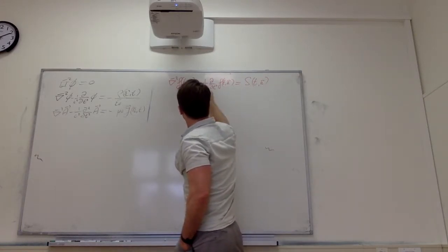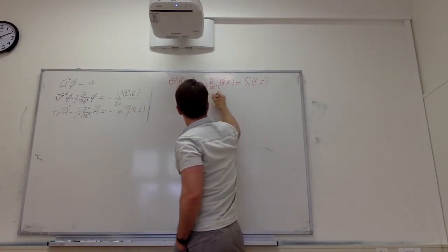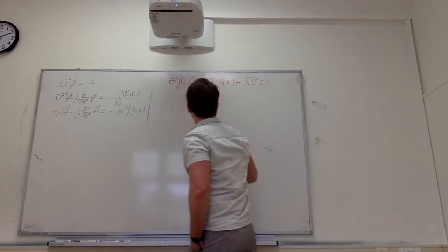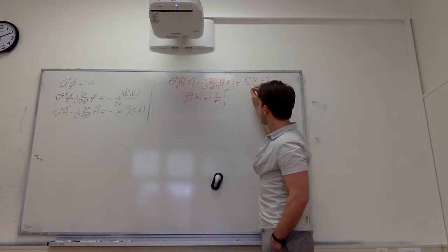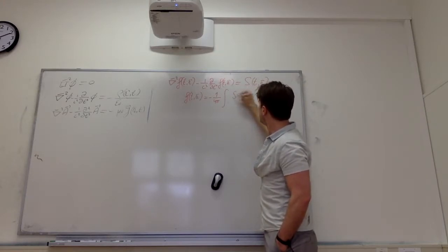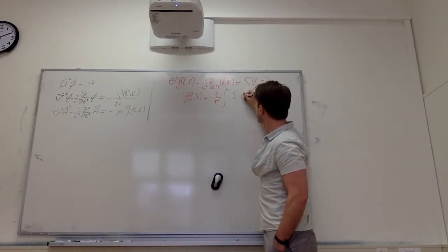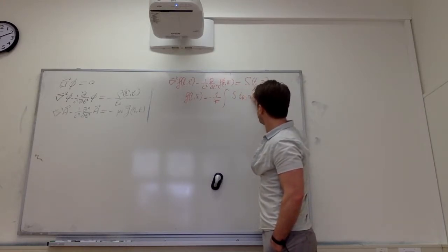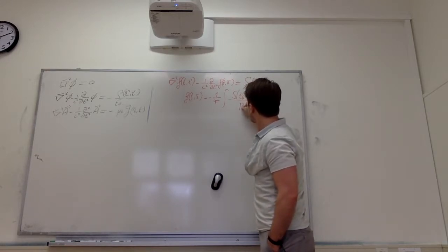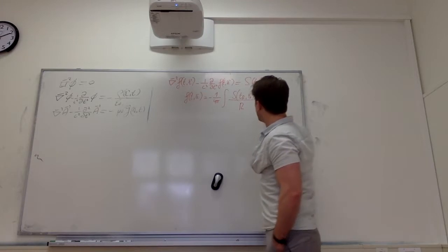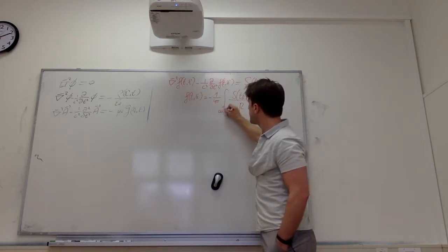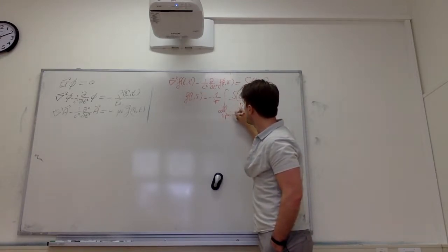The solution is minus one over four pi, integral of S as a function of retarded time over big R, integrated over all space — all of the universe.